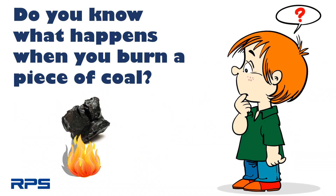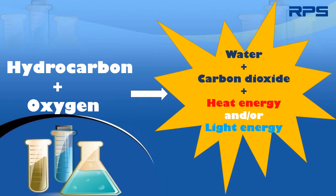Do you know what happens when you burn a piece of coal? Coal is a fossil fuel. All fossil fuels contain hydrocarbons — that is, compounds of hydrogen and carbon. When a substance containing hydrocarbons reacts with oxygen, it results in the formation of water and carbon dioxide, along with the release of energy in the form of heat and light.